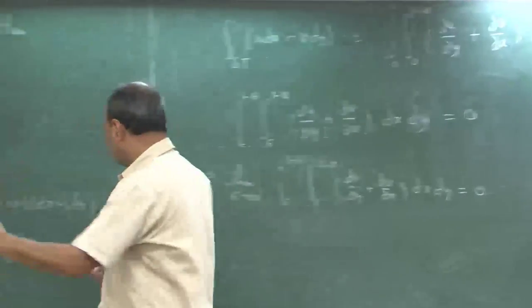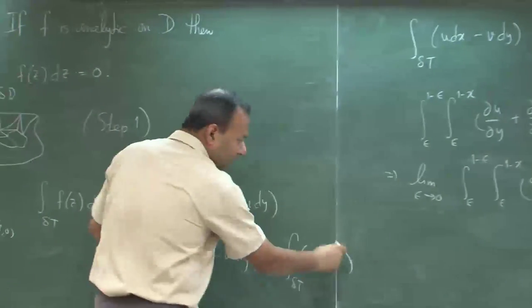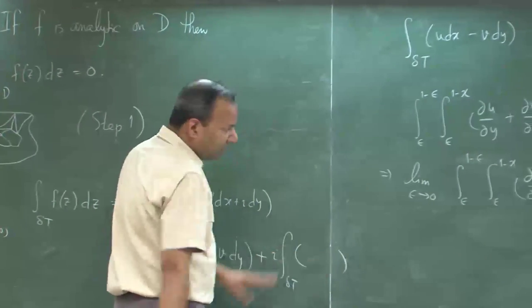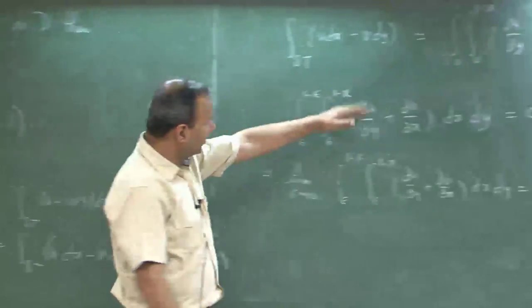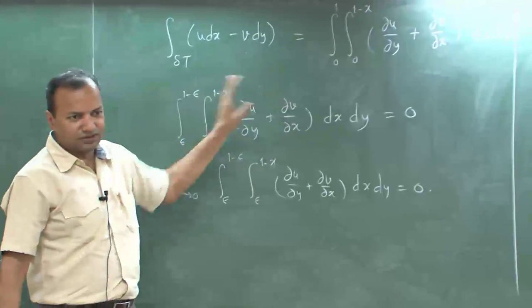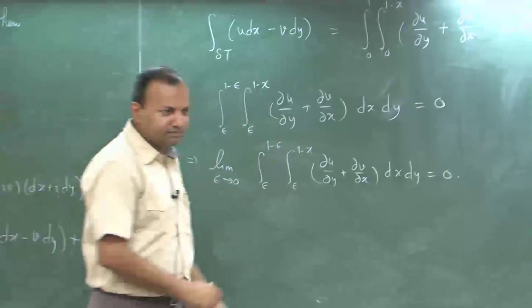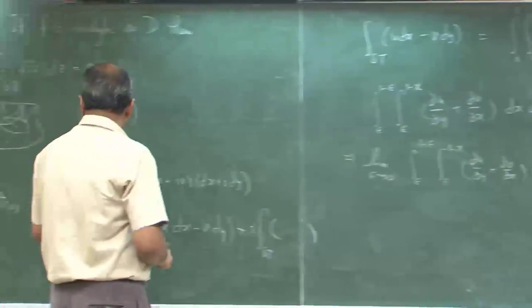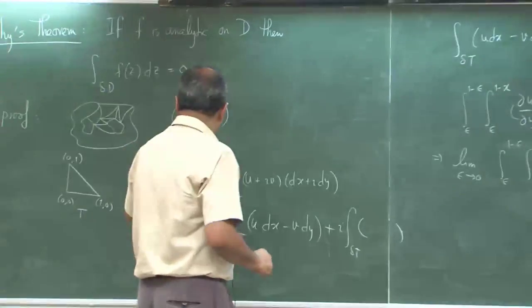That completes step 2, because for the other integral you can do the same thing and you will get something similar, but the other Cauchy-Riemann equation will come into play. So that completes step 2.